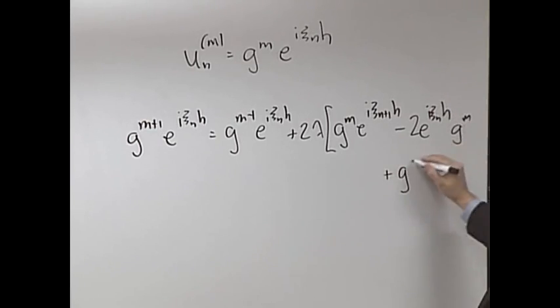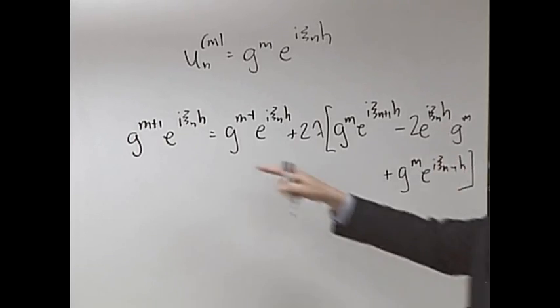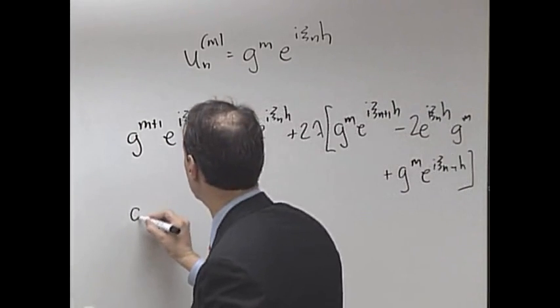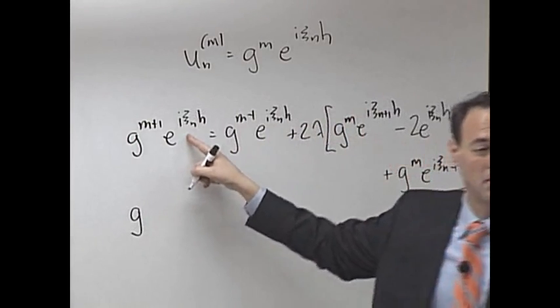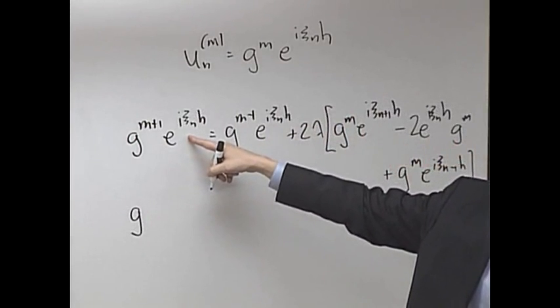Oh, and this has a g of m with it, and then g of m, e to the i c of n minus 1h. So just like before, g of m is everywhere. Kill them off. Divide by g of m, you're going to be left with 1/g here. And then also multiply by e to the minus i, c of mh.